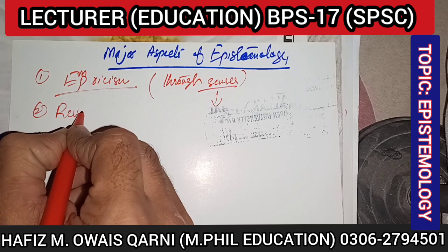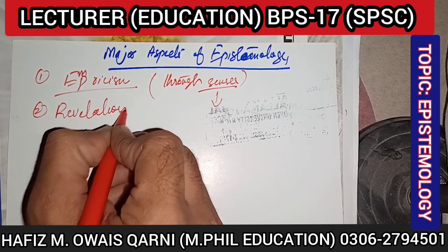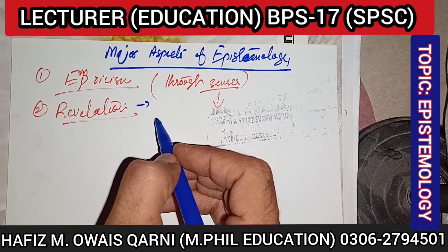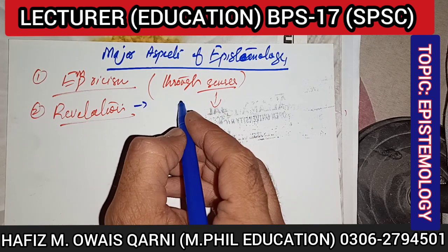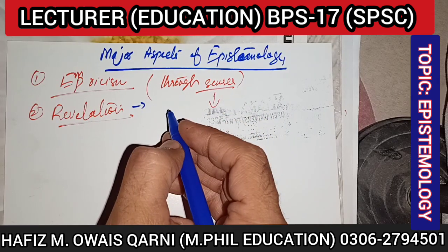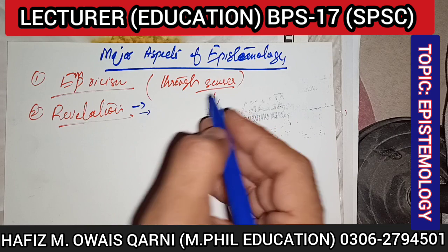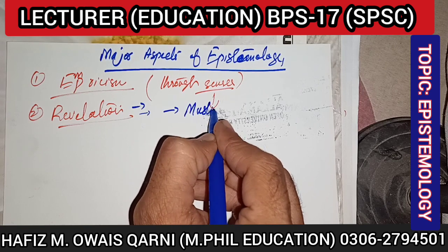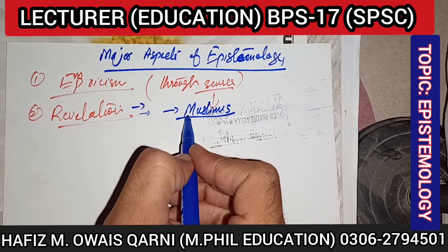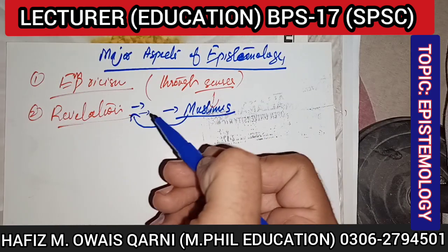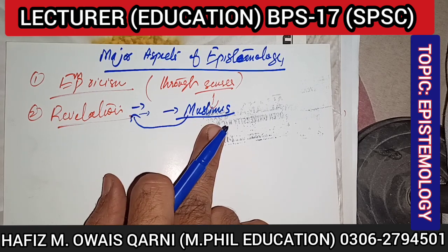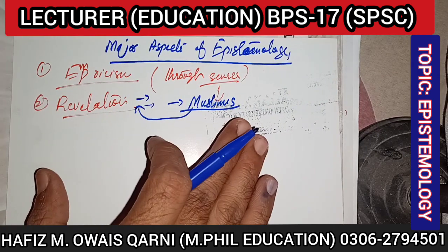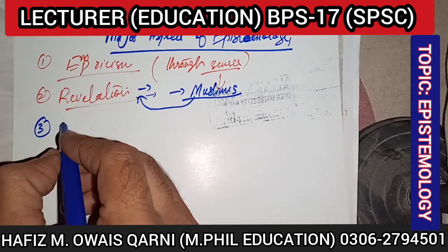The second aspect is revelation. This is what we call 'wahi' in theology, and it is given great importance there. Revelation means the Quranic verses or any message that comes from God. For example, the angel Jibreel (A.S.) brought Allah's messages to the Prophet (S.A.W.). As Muslims, we have no doubt about this — we are ready to give our lives for it — because our source of knowledge is revelation. This applies across religions, including Christianity and Judaism.